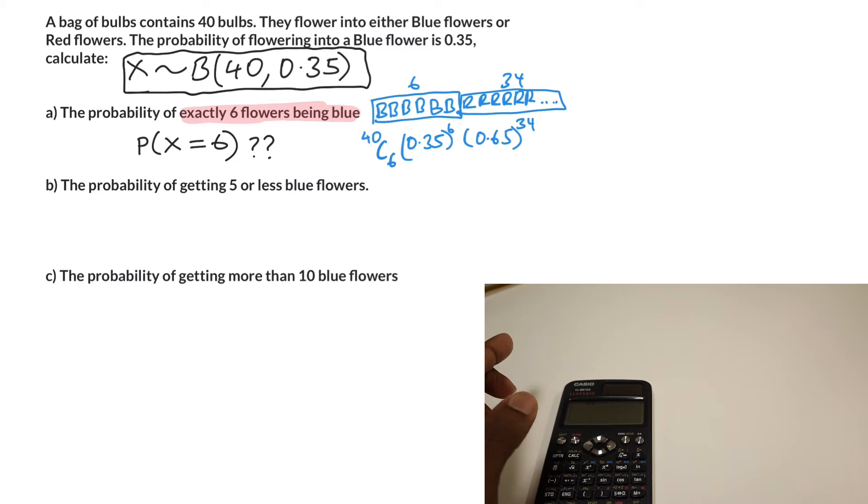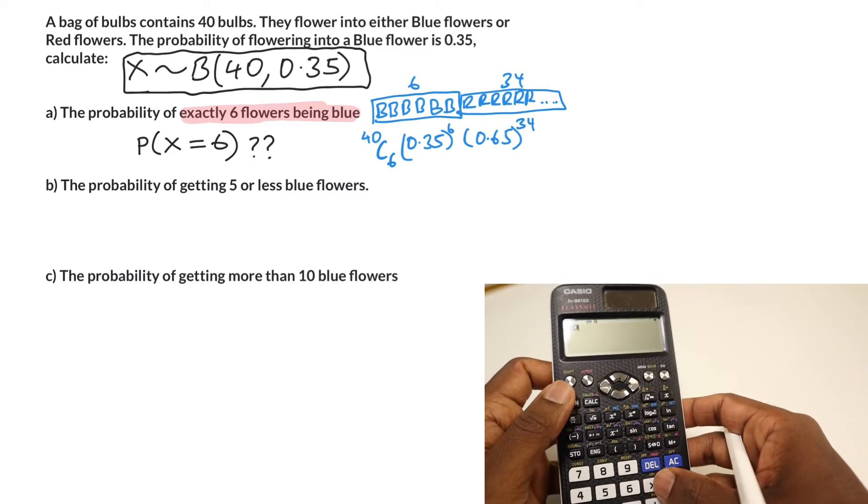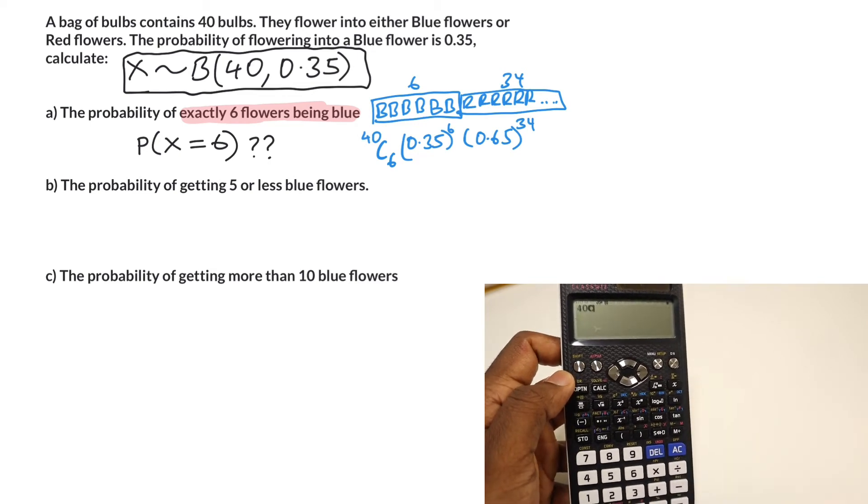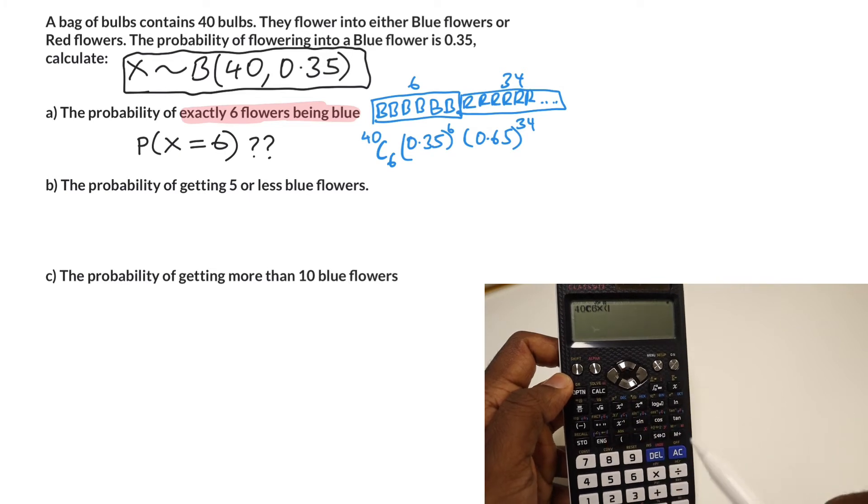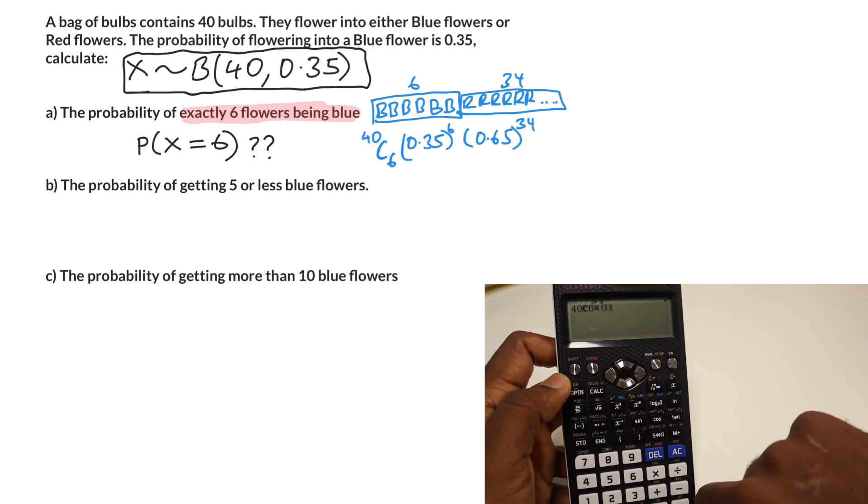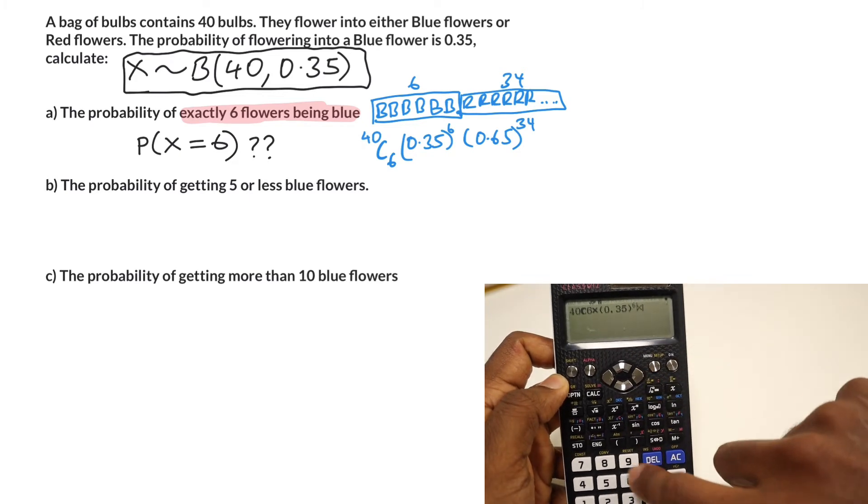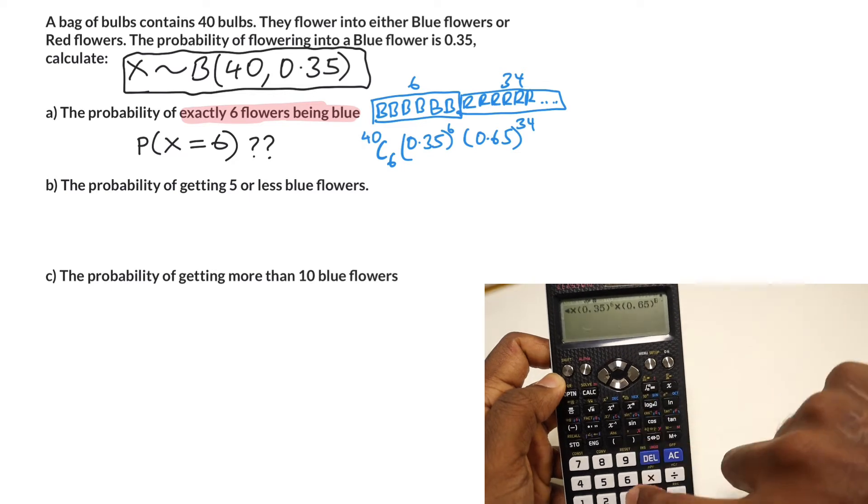So you've got 40 and then there's the choose button, combination button, six. Multiply that by 0.35 to the power of six, and then multiply that by 0.65 all to the power of 34.